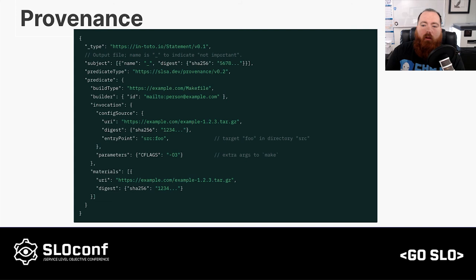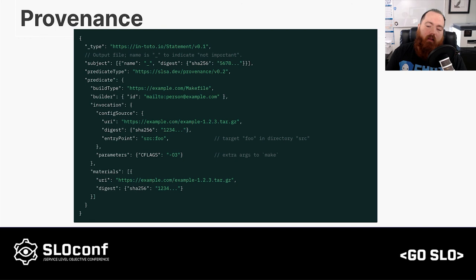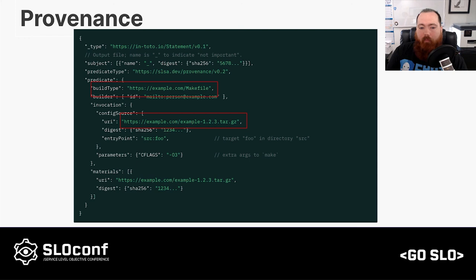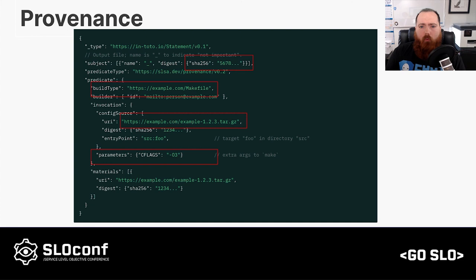Provenance — and having your artifacts have provenance — is another SLO that should be tracked. Provenance is the ability to track your software back to the source, and it helps define all of the moving parts in your complex supply chain. It needs to be there from the beginning. It is a SLSA Level 1 requirement that it's available, and a Level 2 requirement that it is signed. Suppose that someone downloads the tar.gz in this example, extracts it, and runs a make command with the extra arguments on the screen — it should result in the 567 hash.